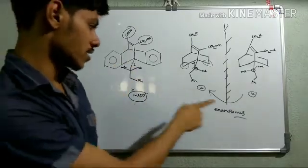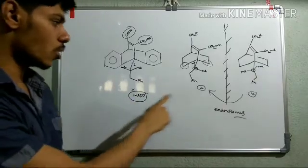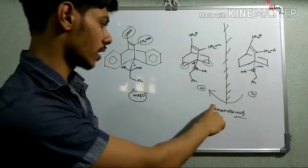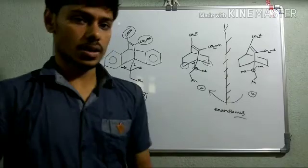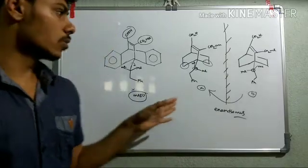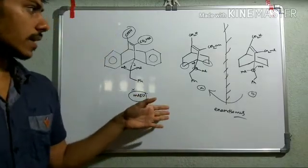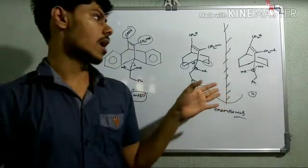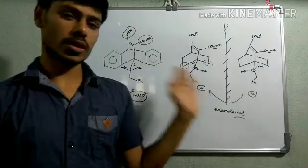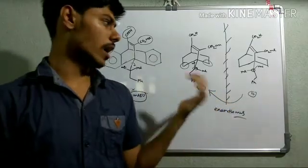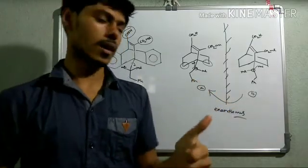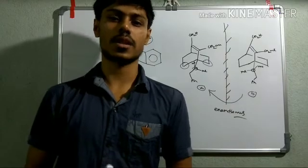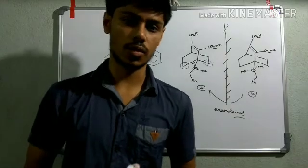This is a very good example. A question may also be asked about how many isomers are possible for this molecule — three isomers are possible: one meso compound and two enantiomers, A and B. This is from one of the CSIR NET exams. I hope you enjoyed the video; if you liked it, give a thumbs up, share it with your friends, and subscribe to my channel.